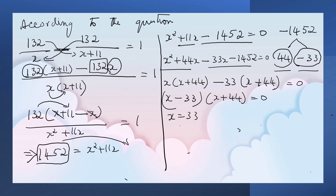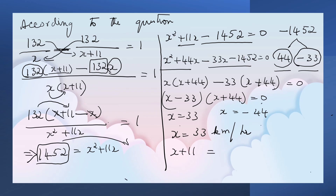So x equals 33 or x equals negative 44. But speed cannot have a negative value. So x, the original speed, is 33 km per hour. The original speed of the car through the normal road is 33 km per hour, and the speed of the car through the flyover is 33 plus 11, that is 44 km per hour. So the current average speed of the car is 44 km per hour.